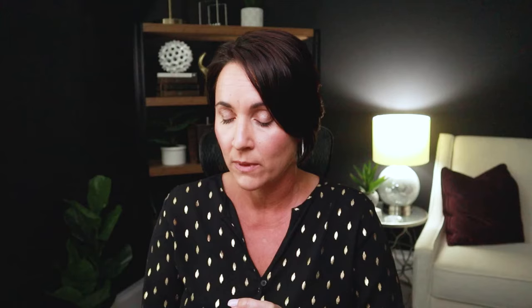Answer B: be educated with non-disabled peers to the greatest extent possible. I like B because what B is outlining is least restrictive environment, LRE. You're going to see this as a theme throughout all special education tests and classes. Being educated with non-disabled peers is really important.